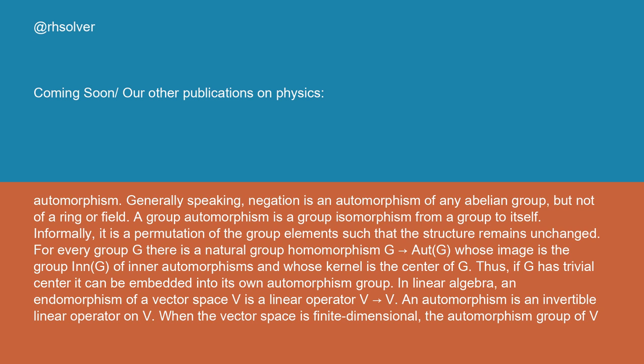Generally speaking, negation is an automorphism of any abelian group, but not of a ring or field. A group automorphism is a group isomorphism from a group to itself. Informally, it is a permutation of the group elements such that the structure remains unchanged.